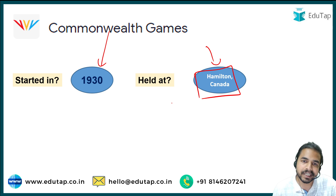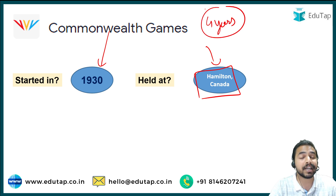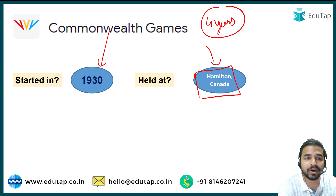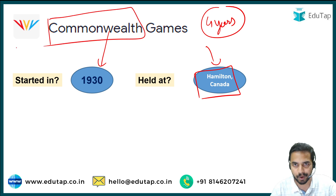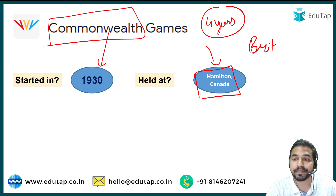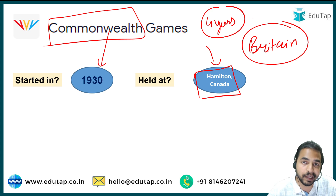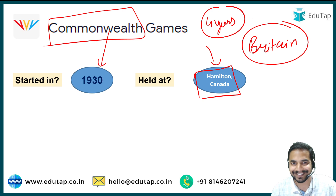These games are held once every four years. Now you must be thinking — what exactly is the Commonwealth? Commonwealth is a group of countries which were earlier a part of the British Empire, meaning they were once ruled by Britain. That is why it is called the Commonwealth Games. All those countries earlier ruled by Britain are part of the group of Commonwealth countries.